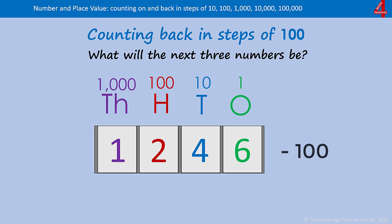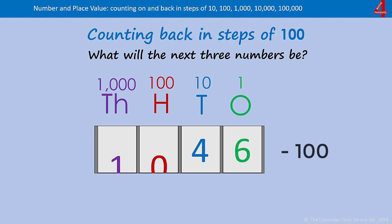Taking away a hundred gives us one thousand, one hundred and forty-six. The next one gives us one thousand and forty-six. We have zero in the hundreds column, so when we take the next hundred away that becomes nine, which means we need to take one away from the thousands column, giving us nine hundred and forty-six.